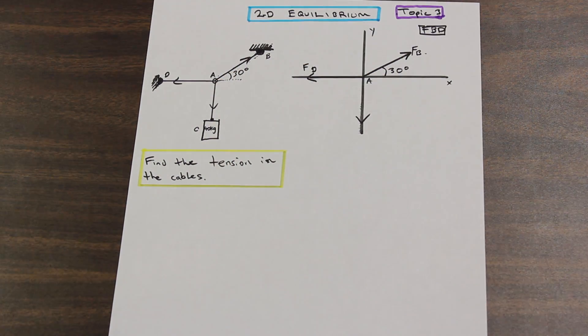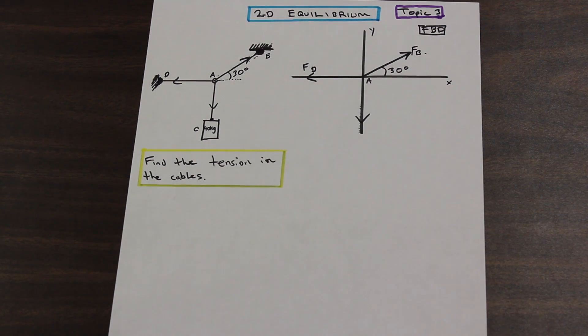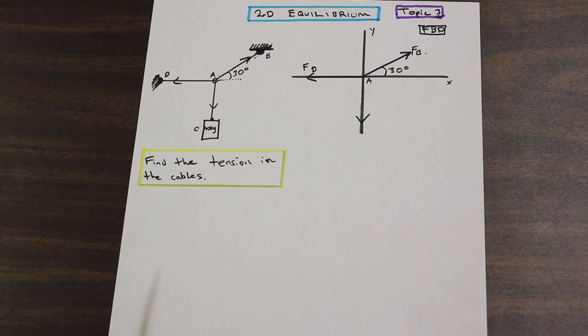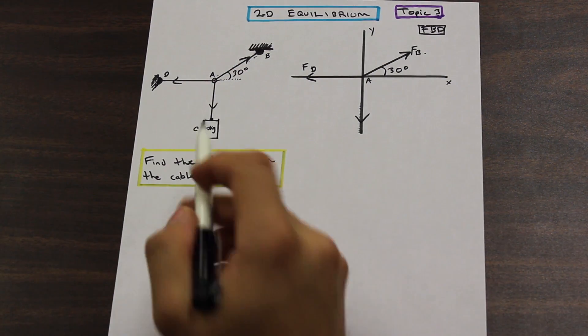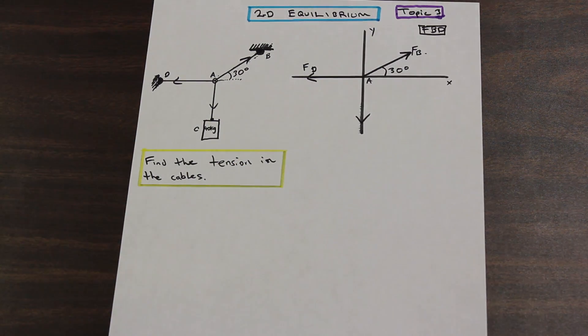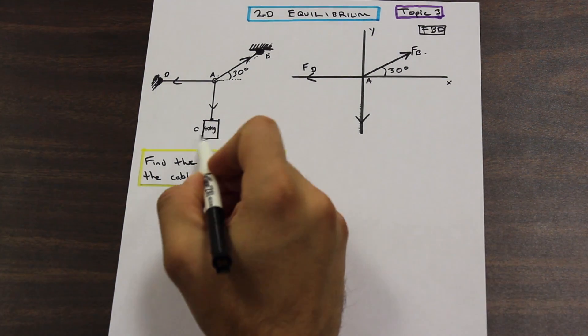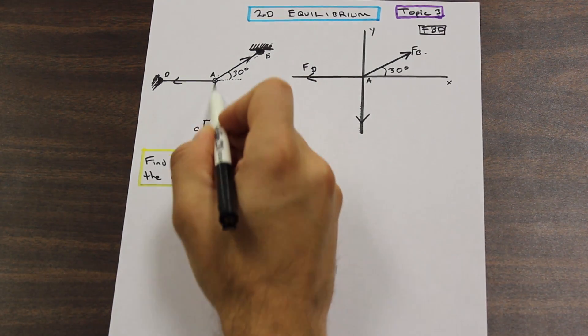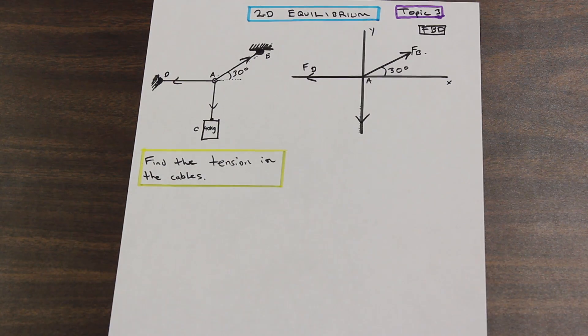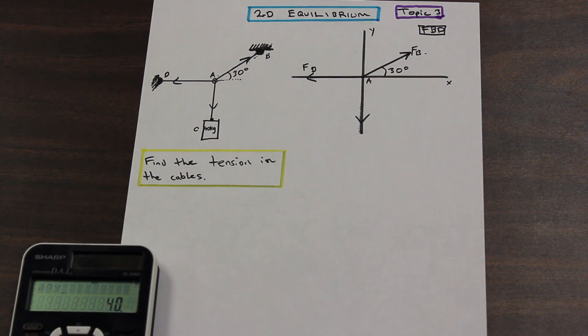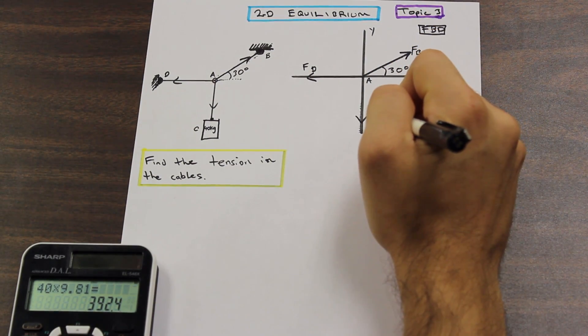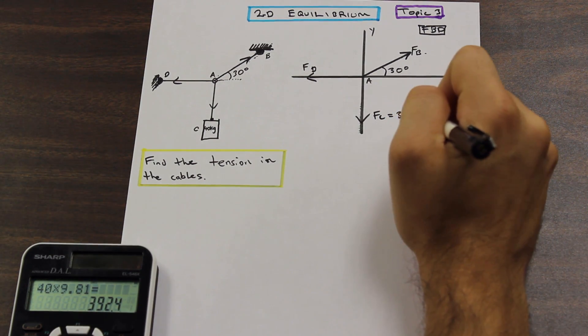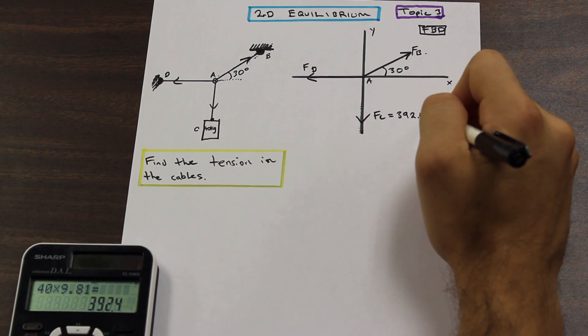However, we have a 40 kilogram mass acting downwards. And as we've discussed before in the introduction video, a unit of force is kilogram meters per second squared. It's not kilograms. So always don't just use 40 kilograms as the force because that'll be wrong. So what we need to do to find the force that this 40 kilogram weight is exerting on this cable here and on the system, we need to multiply 40 by 9.81. So let's go ahead and do that. And we end up with, and we'll say that this is force C, is equal to 392.4 and the units are Newtons.